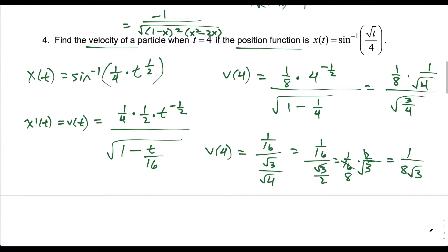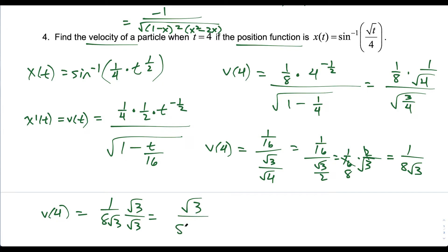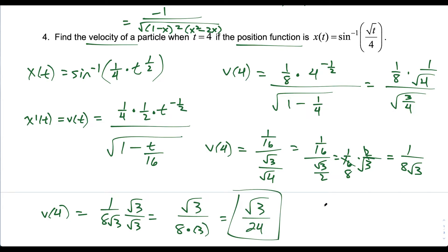As a side note, if you don't want an irrational number in the denominator, multiply the top and bottom by the square root of 3. That gives the square root of 3 over 8 times 3, or the square root of 3 over 24. If you'd prefer a rational denominator, your answer would be the square root of 3 over 24.